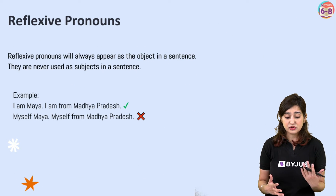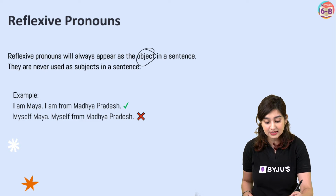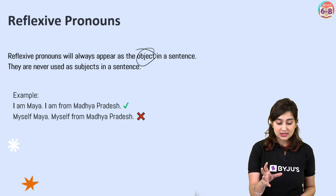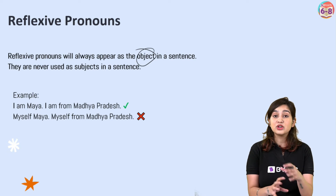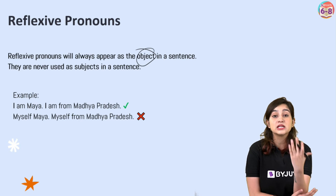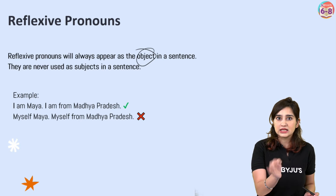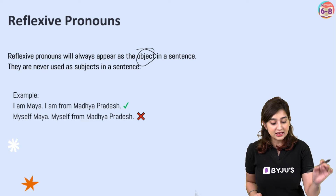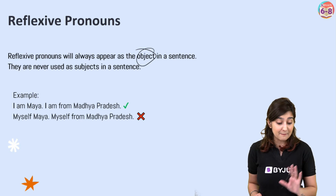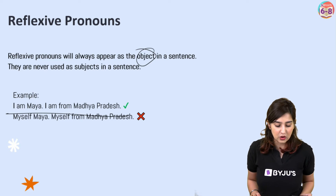The important mistake to avoid: reflexive pronouns will always appear as the object in the sentence — that's why you can never use them in the subject position. Things like 'Myself Asmita' are incorrect. Even though many people say this, it is the wrong way to speak. 'I am Maya. I am from Madhya Pradesh.' You cannot say 'Myself Maya' or 'Myself from Madhya Pradesh' — this is wrong.